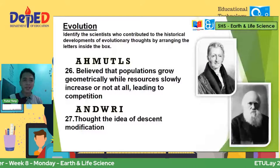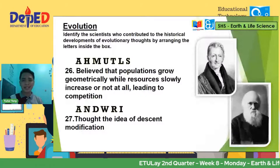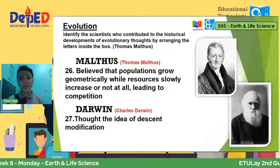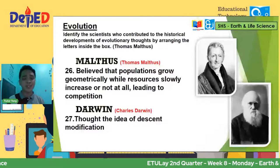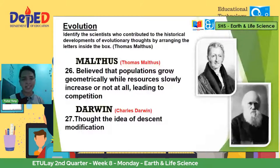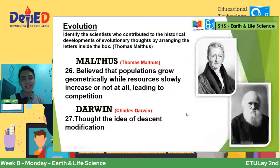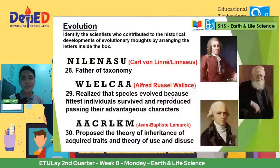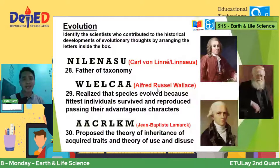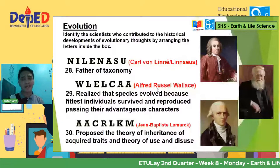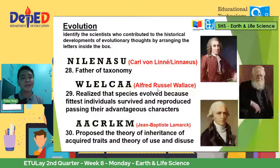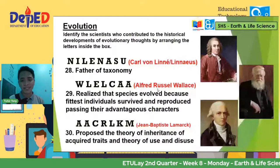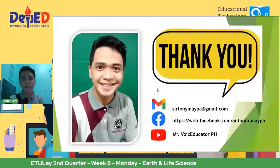We're running out of time so revealing the answers. Thomas Malthus for number 26 believed that populations grow geometrically while resources slowly increase or not at all, leading to competition with regards to resources. Number 27, Charles Darwin — sa kanya nanggaling yung idea na we came from the apes; he thought of the idea of descent with modification. For number 28, we have Carl von Linné, the father of taxonomy, yung classifications — his real name is Carl von Linné, so sobrang tuwa niya sa scientific name pati yung sariling pangalan ginawa niyang scientific name. For 29 is Alfred Russell Wallace, and for number 30, we have Jean-Baptiste Lamarck. These are the European scientists who contributed to our concept of evolution.